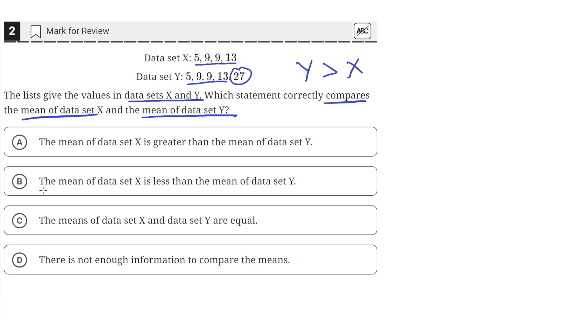So since data set Y has an extra 27, the mean of data set Y is greater. That means the mean of data set X is less than the mean of data set Y. So B is the correct answer.